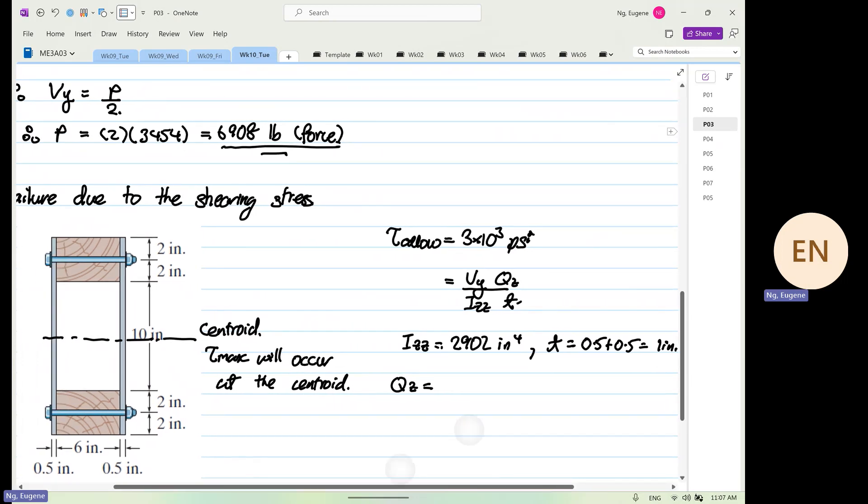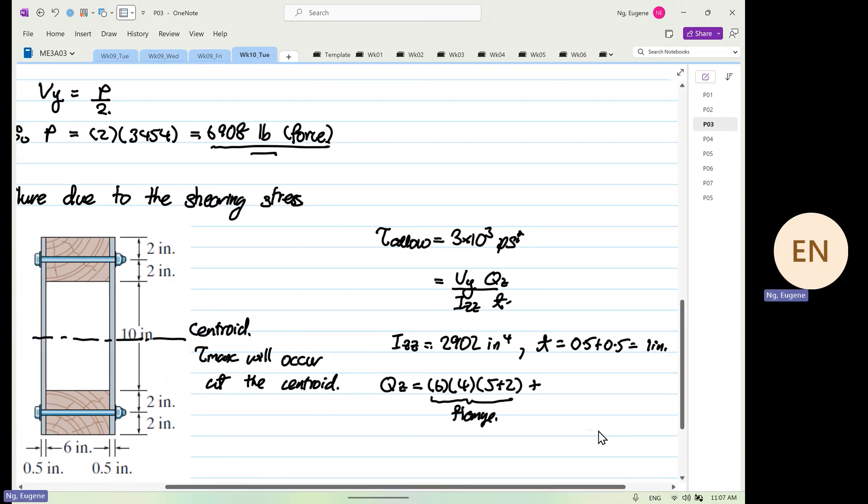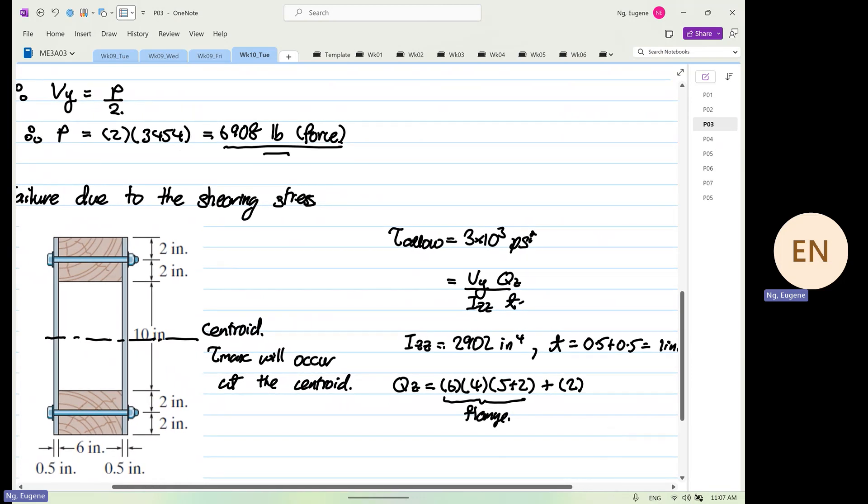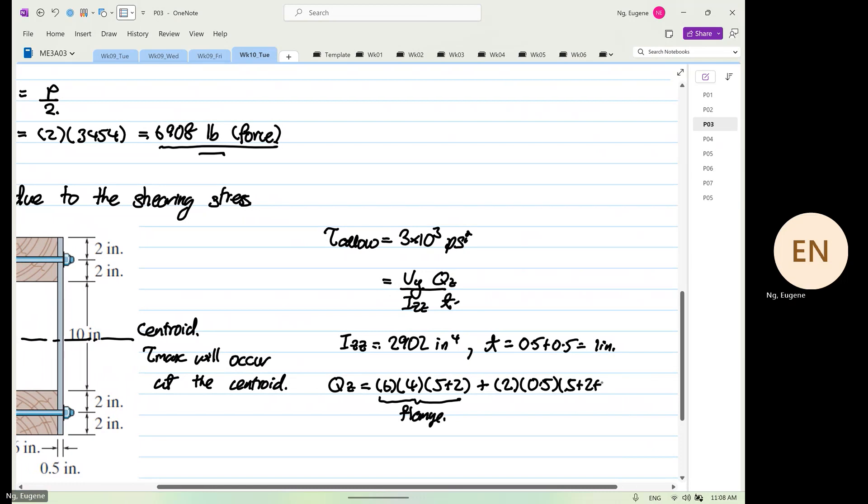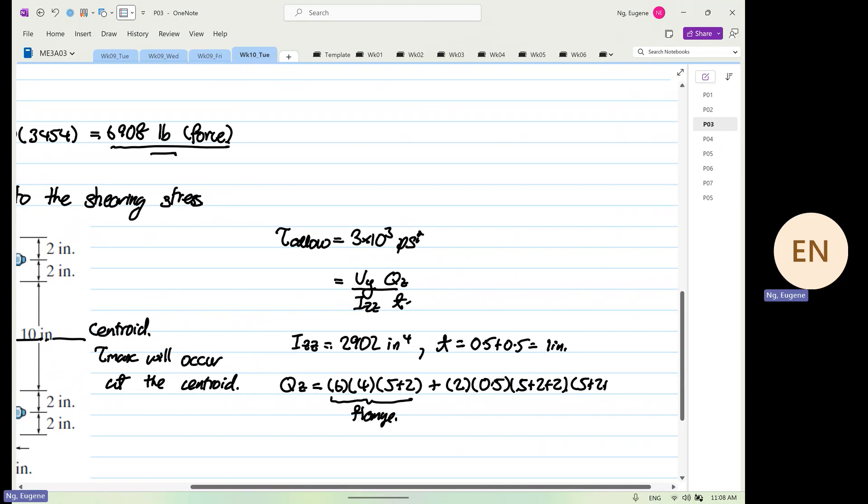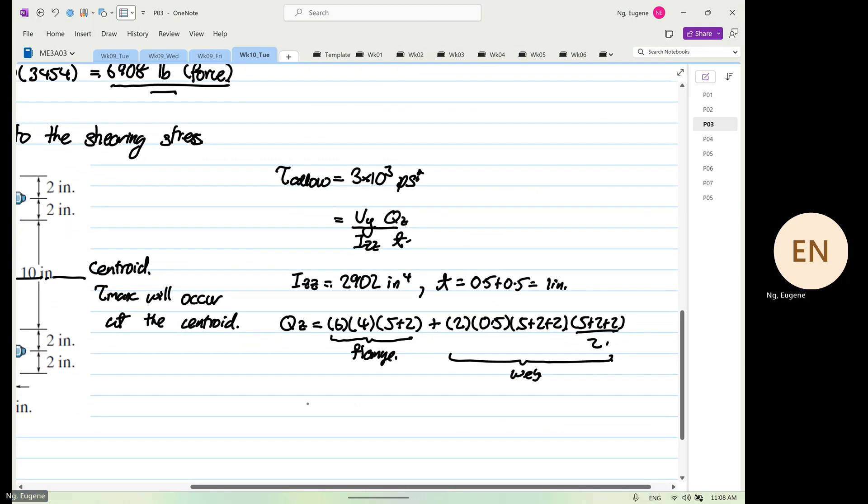Qz is what we need to find out. So Qz again, the width is 6, the depth is 4, the y bar is 5 plus 2. So this one is for the flange. The next one will be for the web. So twice because you have left and right, and then the width is 0.5, the depth is 5 plus 2 plus 2, the y bar is 5 plus 2 plus 2 then divided by 2. So this is for your web.